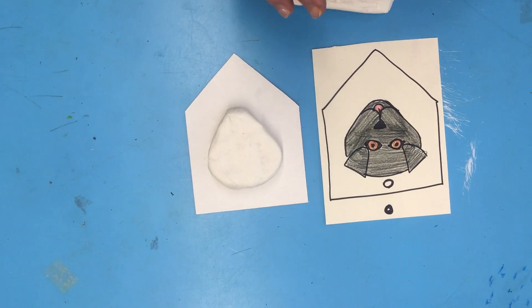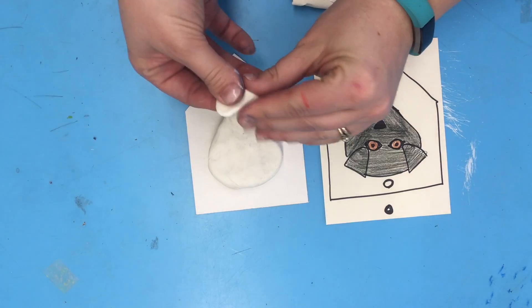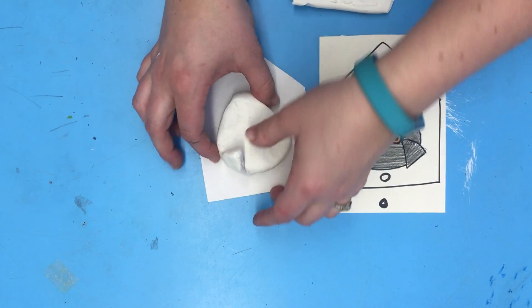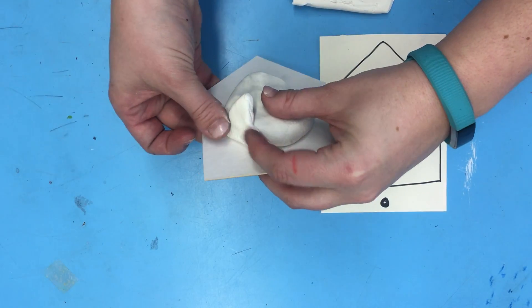So I'm going to take a little piece and I'm going to squish it into a triangle shape for my ear. I'm going to smooth the ear on the back.